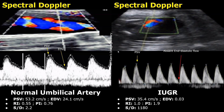On the left is a normal spectral Doppler study of the umbilical artery in the third trimester. The PSV is 53.2 centimeters per second, and there is a sufficient amount of forward flow during diastole. The EDV is 24.1 centimeters per second. The resistive index is normal at 0.55, the pulsatility index is normal as well, and the SD ratio is also normal — calculated by dividing 53.2 by 24.1, which gives 2.2.